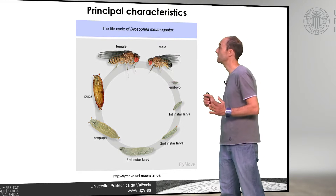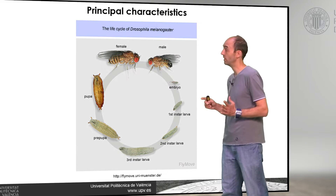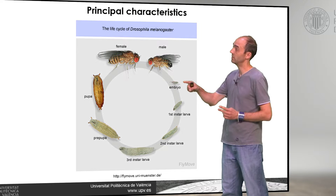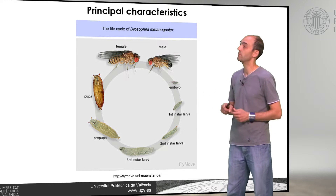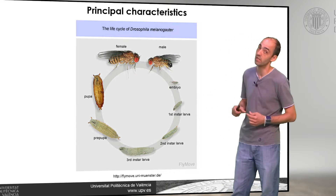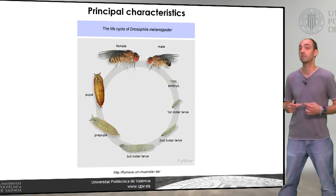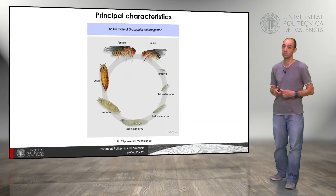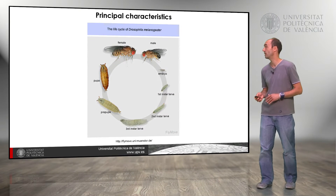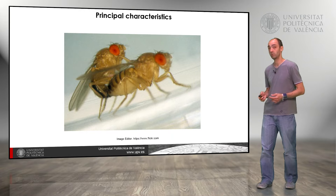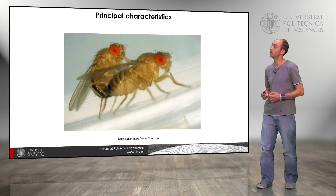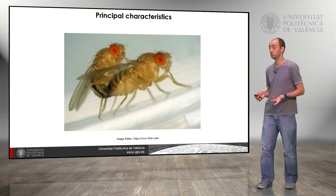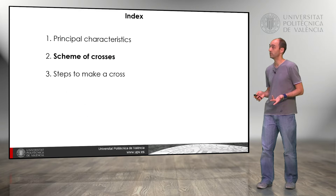Once the larva has complete development, we have the pupa, and in the pupa the metamorphosis happens. An adult fly arises, and we can start a new cycle in a few hours because the adults are fertile in around 8–12 hours. Here we have a male copulating with a female.